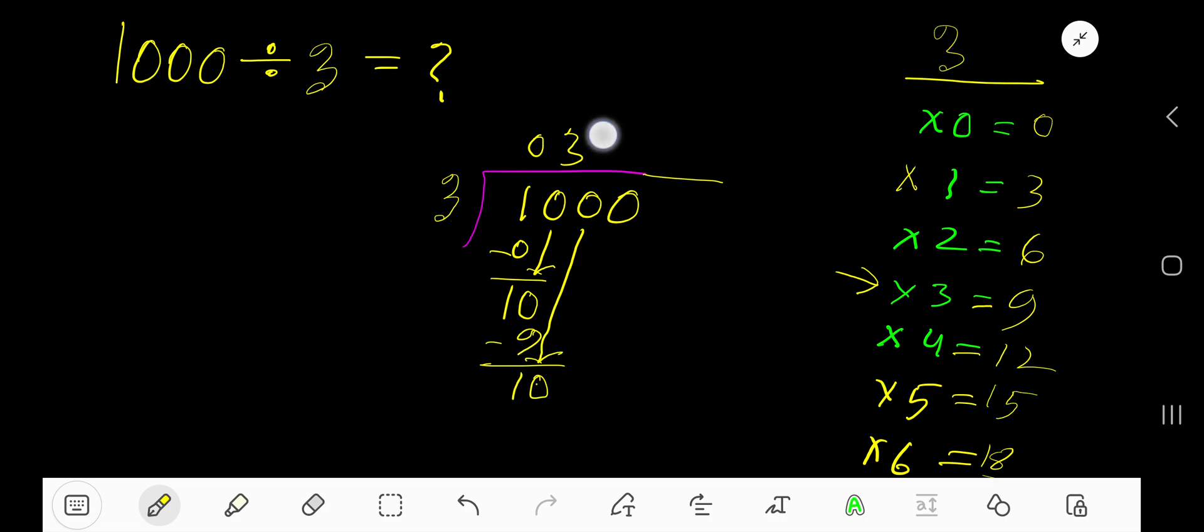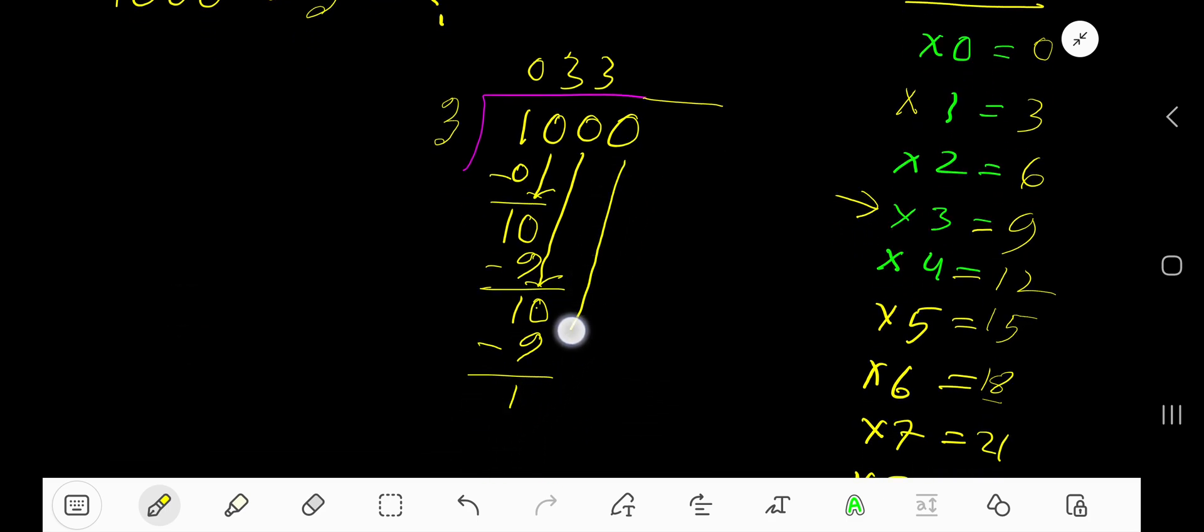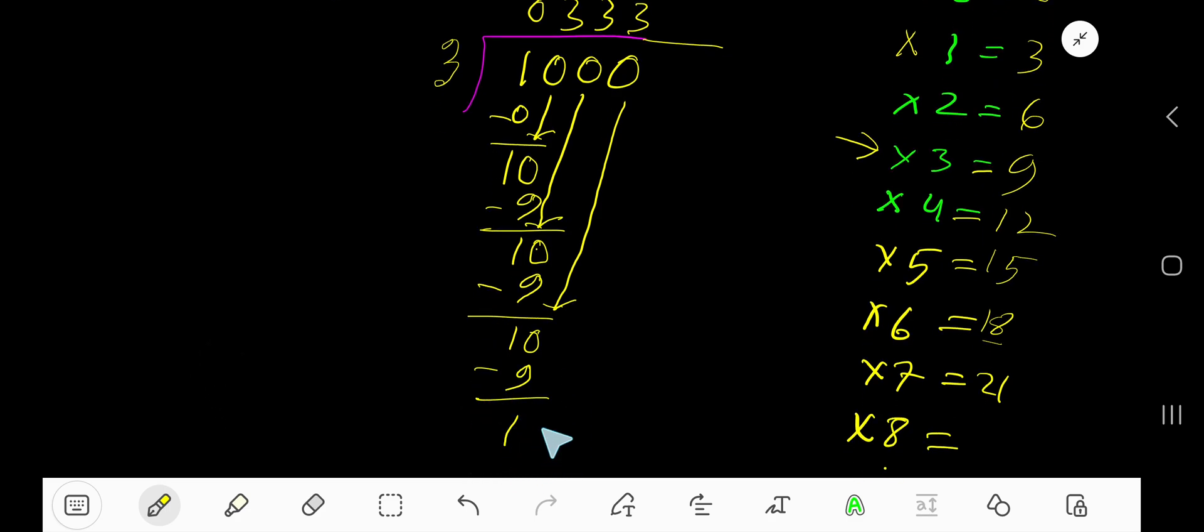3 goes into 10 how many times? 3 times. 3 times 3 is 9. Subtract, you're getting 1. Bring down this 0. The pattern continues, giving you 1 as remainder.